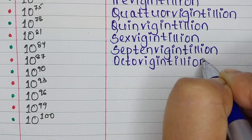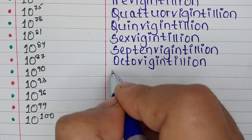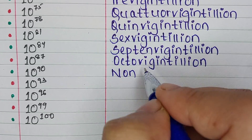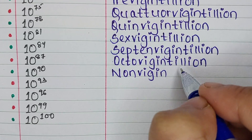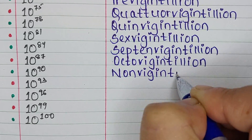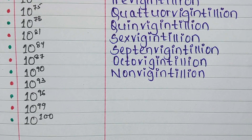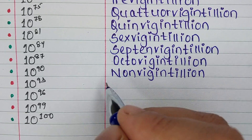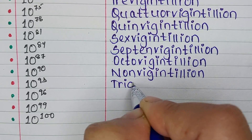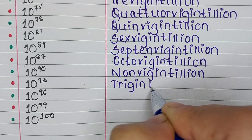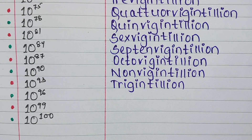Next is 10 to the power 90. The name for this power notation is Novemvigintillion. Next up is 10 to the power 93. This is known as Trigintillion.